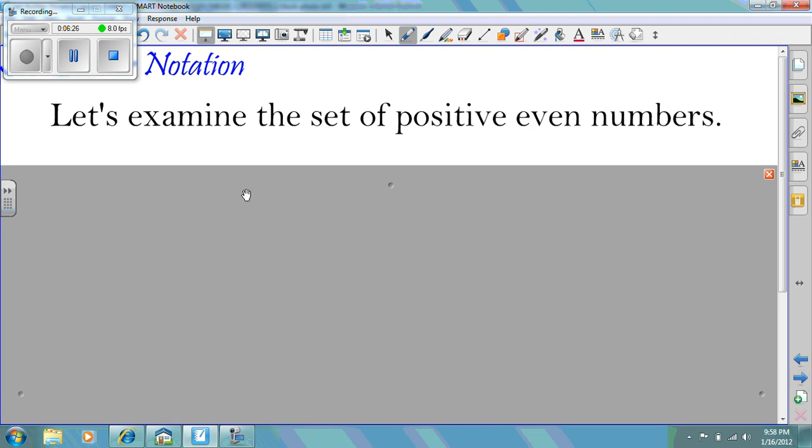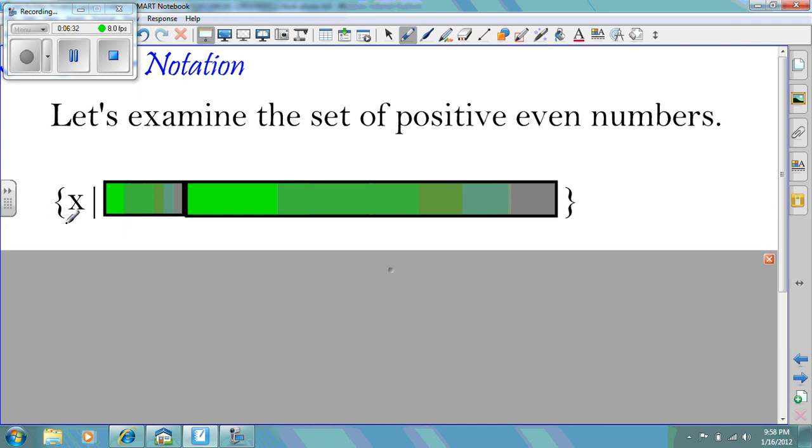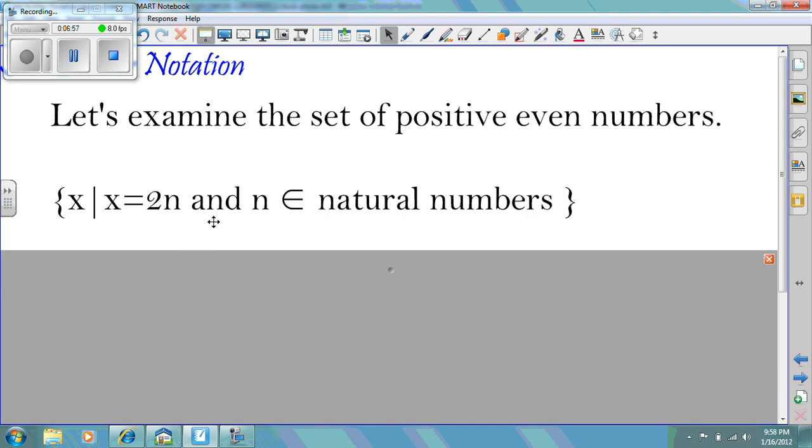How about the set of positive even numbers in set builder notation? Well, we're going to start out with the set of all X, such that, and then we're going to put a formula here. This represents positive numbers. When we take 2 times N, we're going to get a positive number. Except, we have to put an extra notation to make sure we get the positive even numbers. And so that's what's going to be behind this. And we're saying that N is an element of the natural numbers, which would start 1, 2, 3, 4, 5. Or we would use the capital letter N with an extra little bar down here. And it would look like something like that.